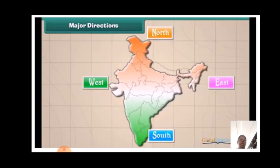Before understanding the Earth, we need to know about directions. The directions on the ground are always shown with respect to the north. If we know the north, it is easy to find the other directions — south, east, and west. There are four cardinal directions. The sun rises in the east and sets in the west. If we stand facing the sun in the morning, we face the east, the west is towards our back, the left hand points towards the north, and the right hand points towards the south.